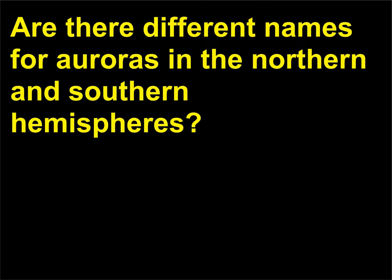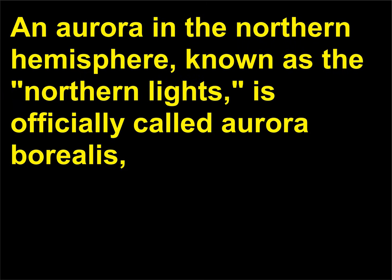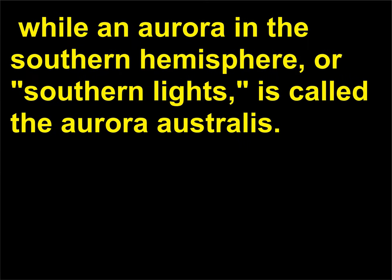Are there different names for auroras in the northern and southern hemispheres? An aurora in the northern hemisphere, known as the northern lights, is officially called aurora borealis. While an aurora in the southern hemisphere, or southern lights, is called the aurora australis.